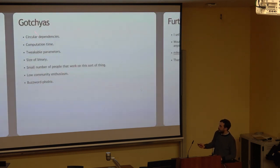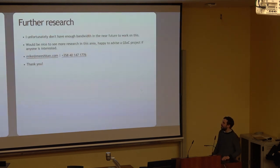And then, gotchas. Circular dependencies, no clue how to deal with them. Computational time is too high. There's no more tweakable parameters. We hate those tweakable parameters. Except once they're gone, we're like, oh man, I missed that average slur boosting thing. The size of the binary is huge. Small number of people that work in this sort of thing. Low community enthusiasm and buzzword phobia. Lastly, I unfortunately don't have enough bandwidth in the near future. But thank you, Werner, for convincing me to come. It's fantastic to see you all and fantastic to meet you for the first time. I really appreciate the opportunity to present my doodling. But if anybody would actually like to research this and embarrass me with much better results, please do. This is my email, phone number, and thank you very much.